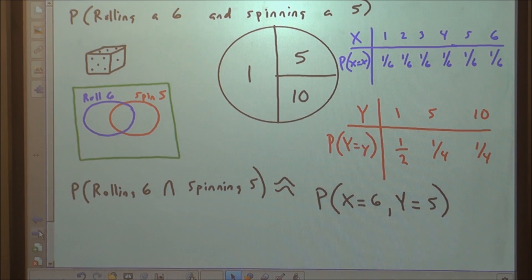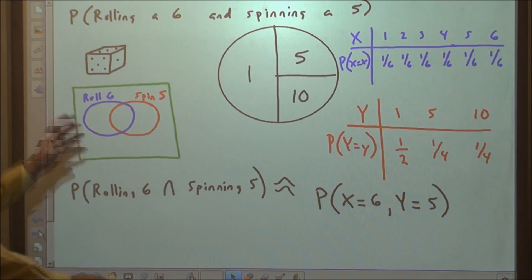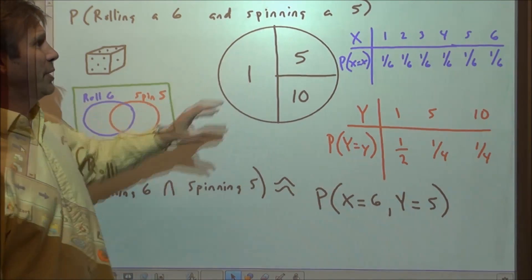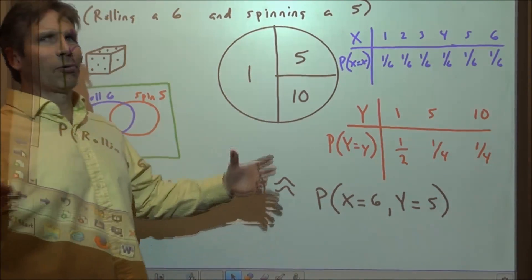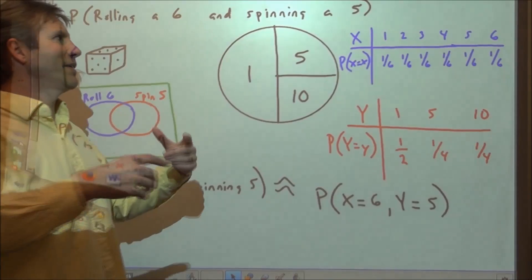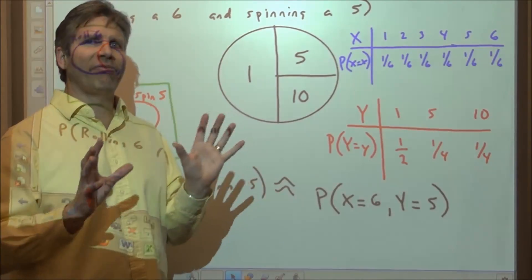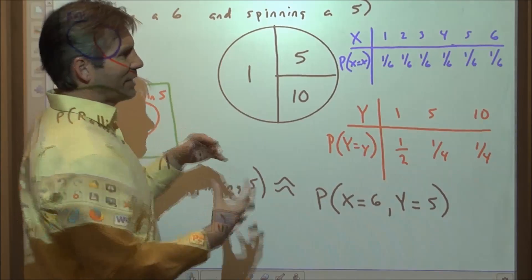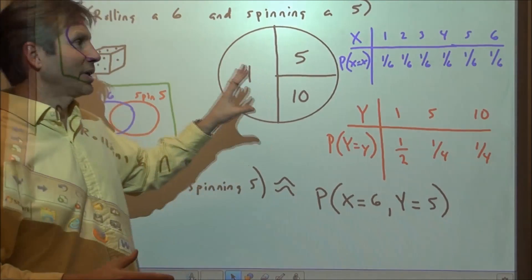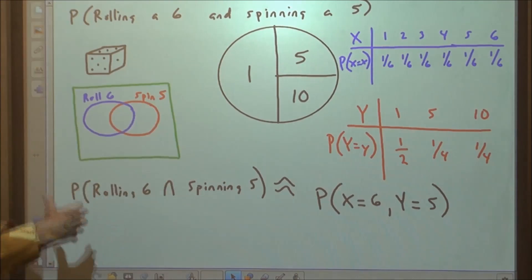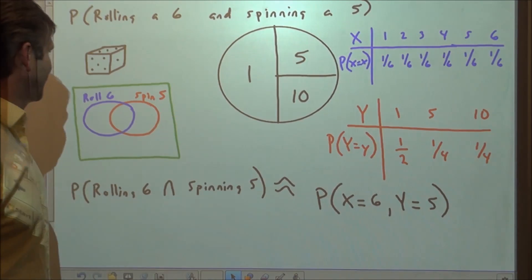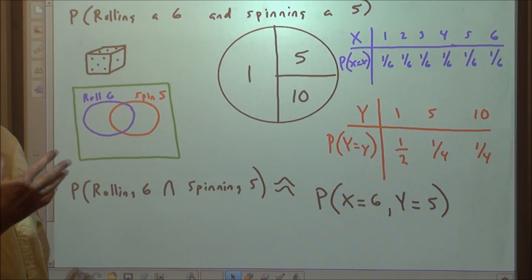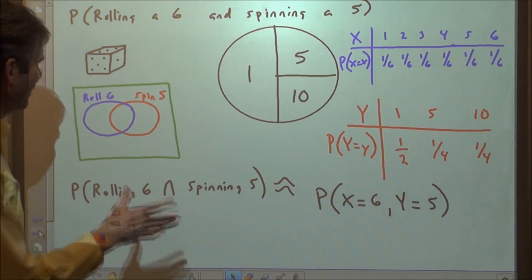Let's do a discrete joint distribution. Suppose we roll a regular six-sided die and spin a spinner that has certain outcomes. We'll pretend it's computer generated and fair, meaning the probability of landing on a number equals its proportional area. There are a couple of things we could look at here.